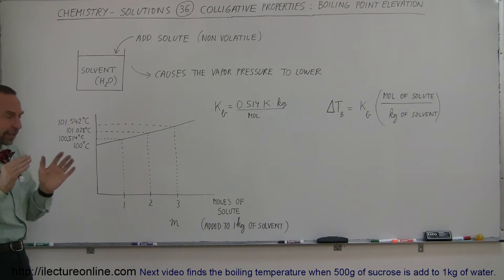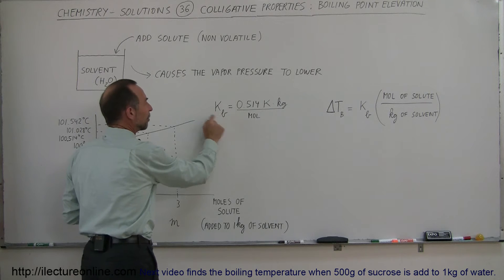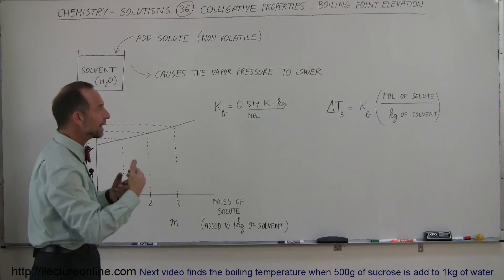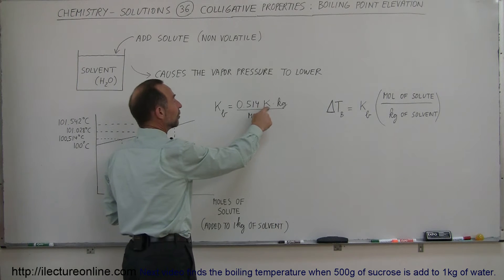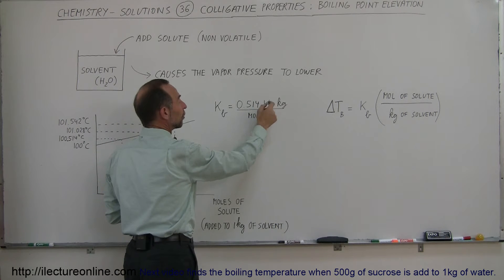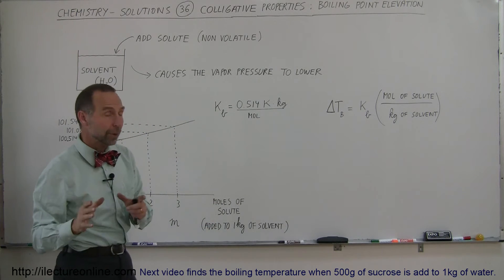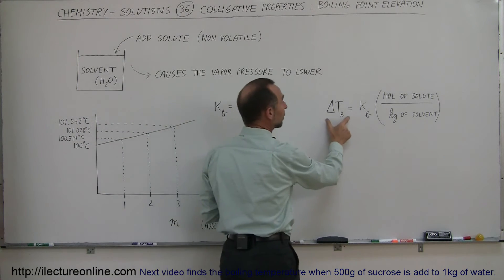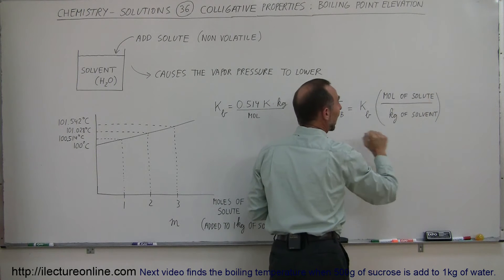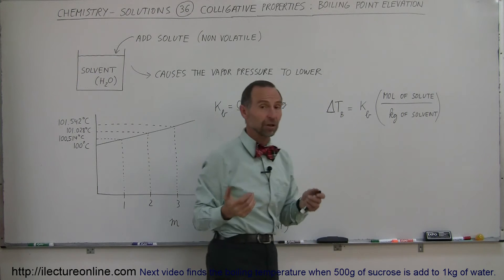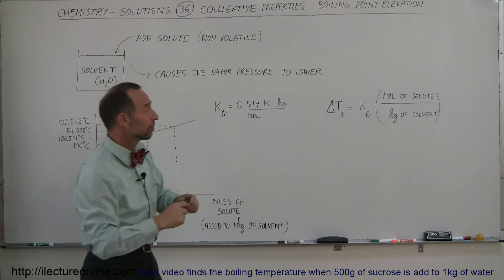We now can put that together into a formula. The constant K sub B indicates the increase in the boiling temperature by 0.514 Kelvin for every one kilogram of solvent and per mole of solute added. The equation becomes: the increase in the boiling temperature is equal to that constant times the ratio of the number of moles of solute added to number of kilograms of solvent added. To help you understand, let's do an example.